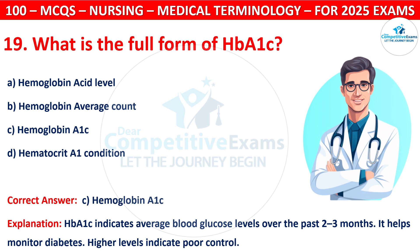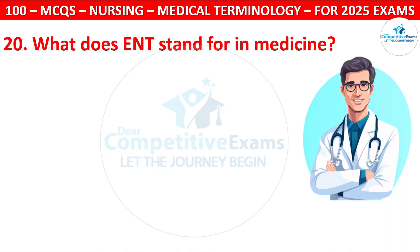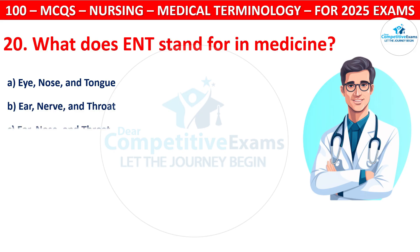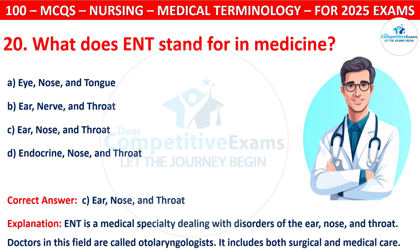Question 20: What does ENT stand for in medicine? Options are: Eye, Nose and Tongue; Ear, Nerve and Throat; Ear, Nose and Throat; or Endocrine Nose and Throat. The correct answer is C, that is Ear, Nose and Throat. ENT is a medical specialty dealing with disorders of the ear, nose and throat. Doctors in this field are called Otolaryngologists. It includes both surgical and medical care.